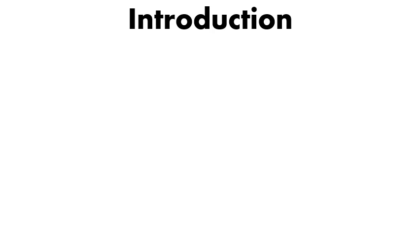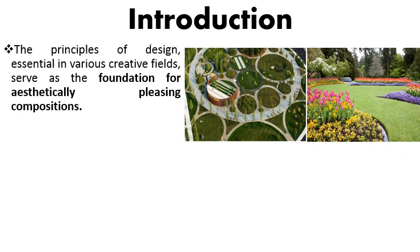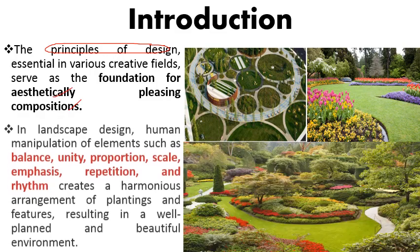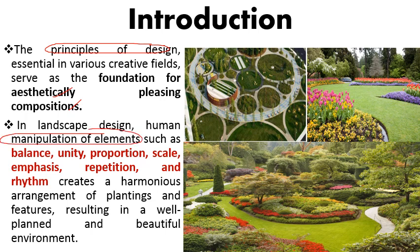For the preparation of an aesthetic, beautiful garden, we have to follow certain principles and modify certain elements. The principles of design, essential in various creative fields, serve as a foundation for aesthetically pleasing compositions. In landscape design, human manipulation of elements such as balance, unity, proportion, scale, emphasis, repetition, and rhythm creates a harmonious arrangement of planting and features, resulting in a beautiful garden environment.